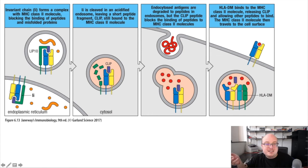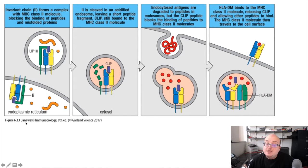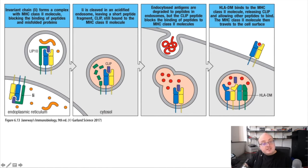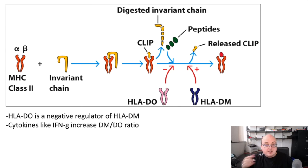The important proteins here for regulating this process are the invariant chain, which blocks antigen binding in the endoplasmic reticulum; then the fragment of the invariant chain called CLIP, which blocks the peptide binding groove until MHC class II comes into contact with HLA-DM, which causes the dissociation of CLIP and allows peptide fragments to bind and ultimately be presented. These are the major regulatory steps in the process of antigen loading, and I want to highlight an additional regulatory step that goes on here.